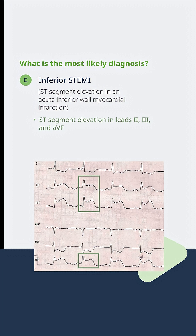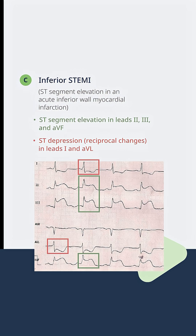And it suggests this is an inferior MI. The right coronary artery is probably involved, or at least in the vast majority of cases. Notice — how do we know that this ST elevation is real? We know it because leads 1 and AVL, looking from a different direction, actually have the opposite: they have ST segment depression. This is a mirror image of the ST elevation in leads 2, 3, and AVF, and it tells you this is the real thing.